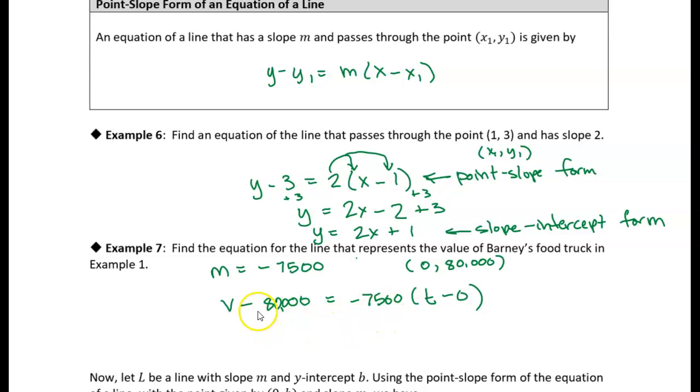So all I'm doing is plugging in the fixed point, X1 and Y1. In this case, it's T equals zero and the value is 80,000. The slope, and then I'm using the variable point, a variable T and a variable V, to represent value and time.